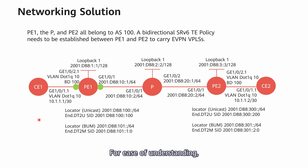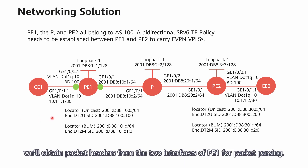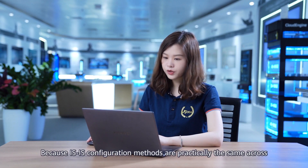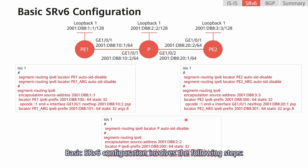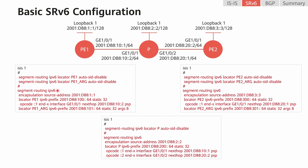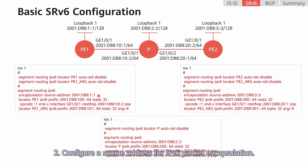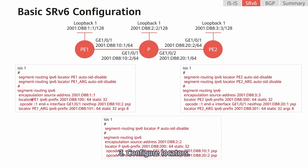For ease of understanding, we'll obtain packet headers from the two interfaces of PE1 for packet parsing. Because IS-IS configuration methods are practically the same across all SRv6 TE policy scenarios, they will not be described in detail. Basic SRv6 configuration involves the following steps: first, enable SRv6 globally; second, configure a source address for IPv6 packet encapsulation — using the IPv6 addresses of the loopback interfaces is recommended; third, configure locators.